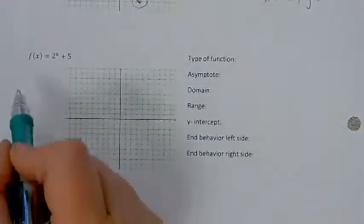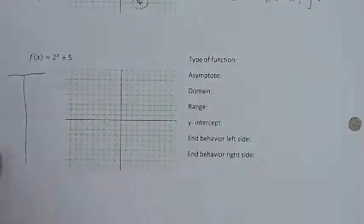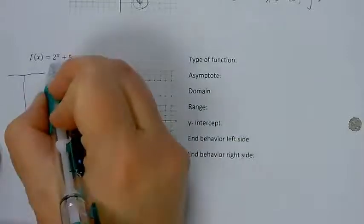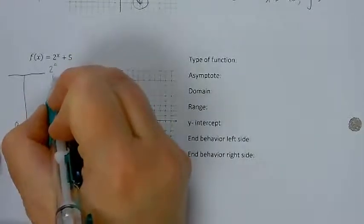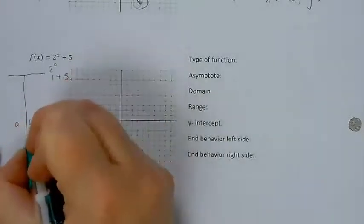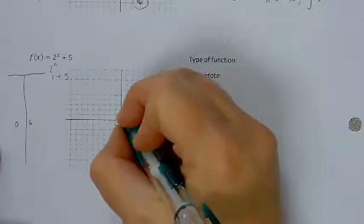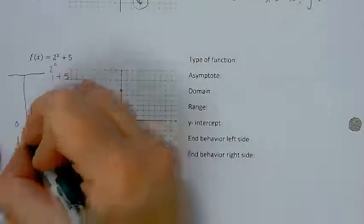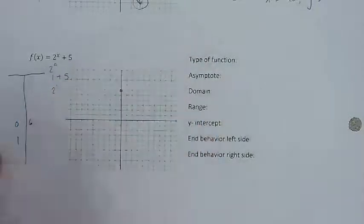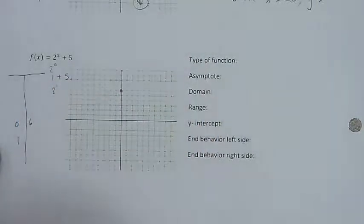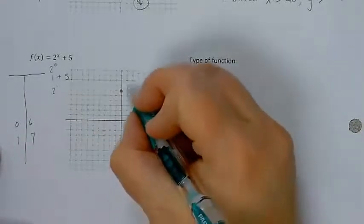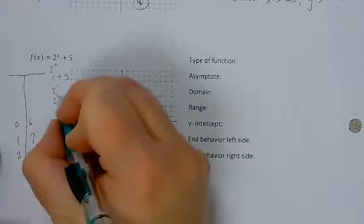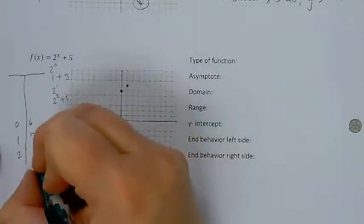Let's look at the next one. I'm going to start with 0 for x, so I have 2 to the 0, which is 1, plus 5, which is 6. If I put in 1 for x, I have 2 to the first, which is 2, add 5, which is 7. If I put 2 in for x, I have 2 squared plus 5, which is 9.